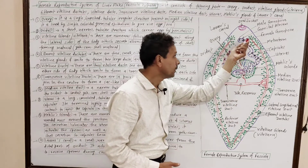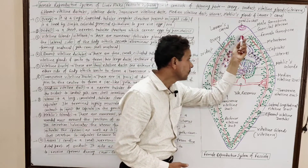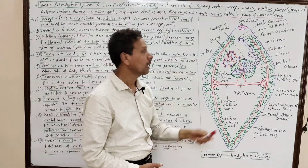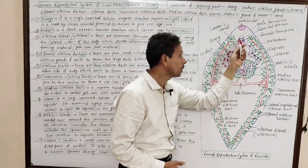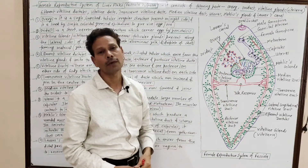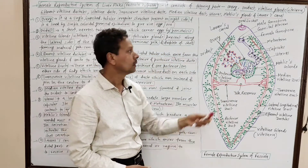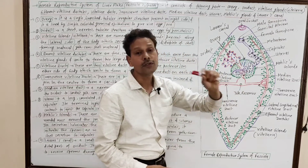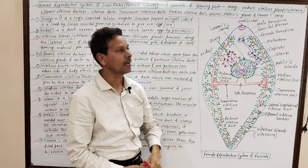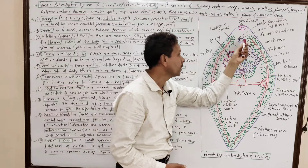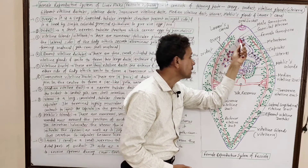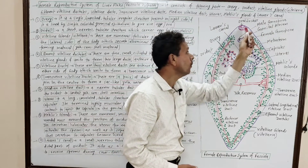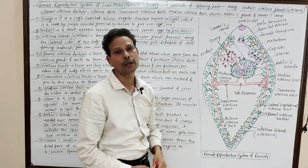Dear students, in this liver fluke there is a common chamber for both reproductive systems — the common genital chamber, or atrium. That atrium possesses both apertures: the male gonopore and the female gonopore.